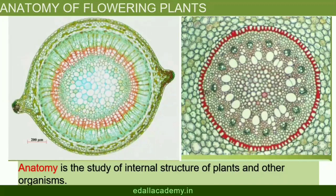Study of the internal structure of plants is called anatomy. Plants have cells as the basic unit; cells are organized into tissues, and in turn the tissues are organized into organs. Different organs in a plant show differences in their internal structure. Within angiosperms, the monocots and dicots are also seen to be anatomically different. Internal structures also show adaptations to diverse environments.